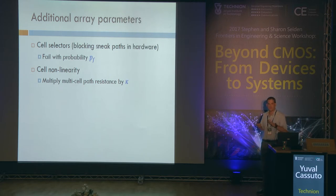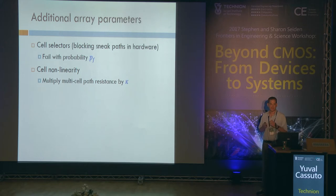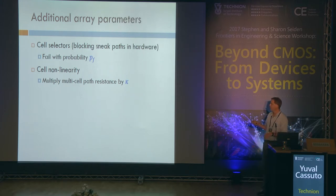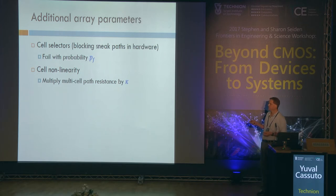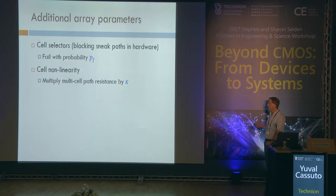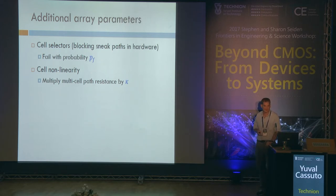For experts who feel this is a hard view of reality: in practice, not all sneak paths create errors. So we introduce into the model mitigations from other domains. For example, we can incorporate cell selectors — hardware mitigation of sneak paths — assuming they fail with some probability P_F due to yield issues. Just provide P_F and we integrate it into the model for an optimal detector. Cell non-linearity is also easy to introduce; in that case we can go beyond L_max equals 3 and deal with more sneak paths.